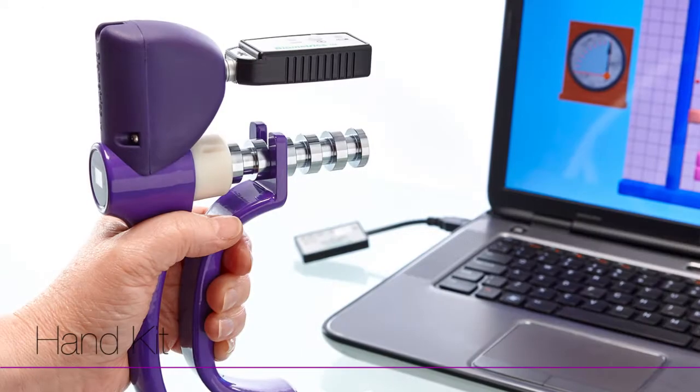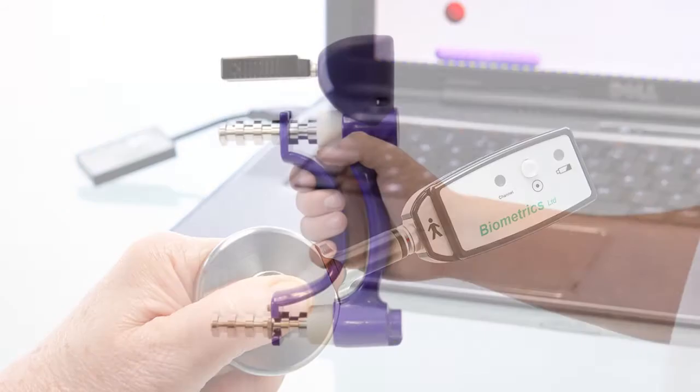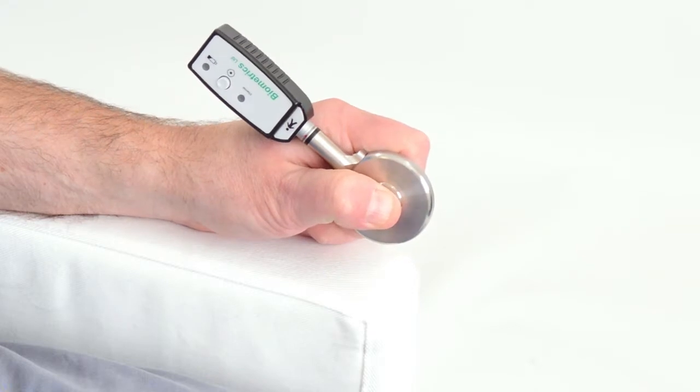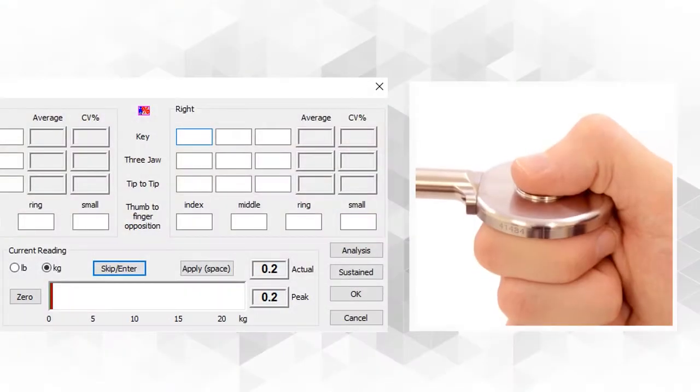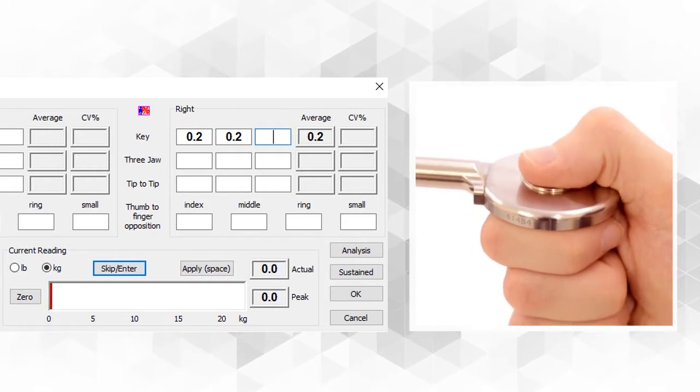The e-link hand kit includes a dynamometer and pinch meter, both precision devices that are designed not only for fast, accurate data collection, but with ample sensitivity to register as little as 0.1 kilos or 0.1 pounds strength measurements.